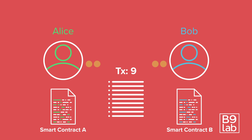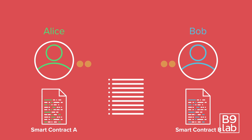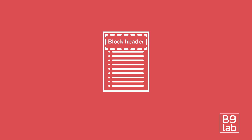Transactions are bundled into blocks by validators. These can be miners, like in Bitcoin for example. Each block contains a signature of the previous block, so the whole dataset can be verified and validated.